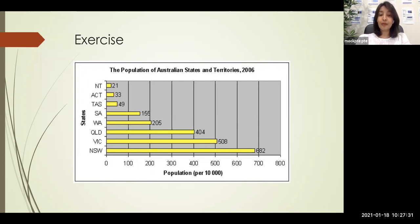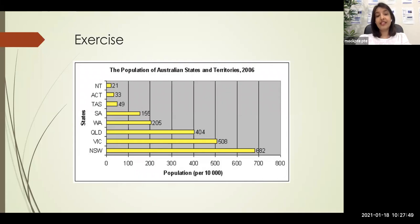Even if you don't say the full forms — Northern Territory, Australian Capital Territory, Tasmania, Southern Australia, Western Australia, Queensland, Victoria, New South Wales — the full forms are not on the image, so saying them won't get you extra points. But saying them won't lose you points either — you're just saying extra words that don't affect your score.